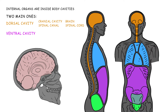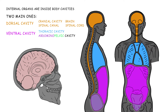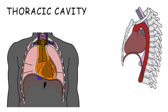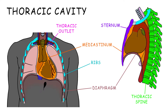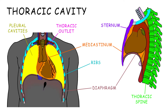The ventral cavity contains the thoracic and abdominal pelvic cavities. The thoracic cavity, found between the thoracic outlet and the diaphragm and encircled by the ribs, sternum, and thoracic spine, contains the mediastinum and pleural cavities.